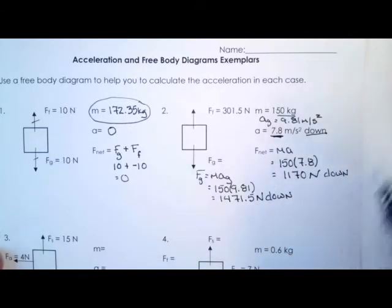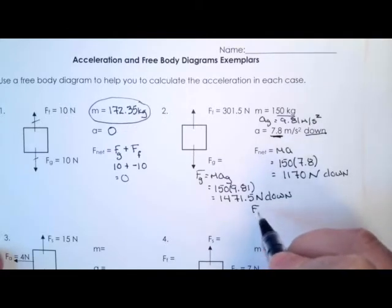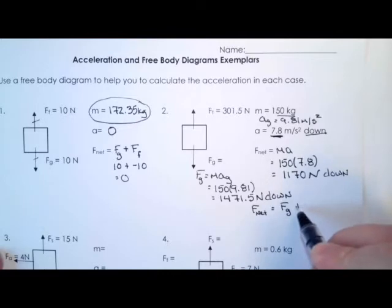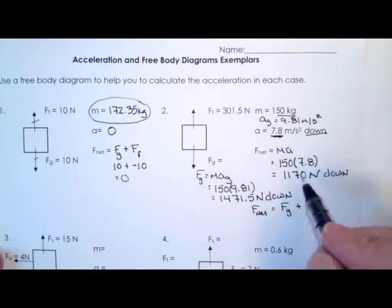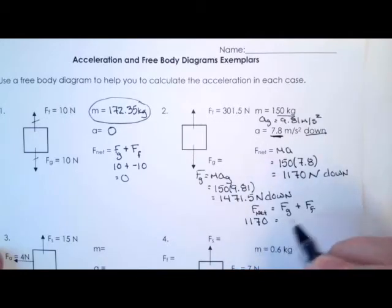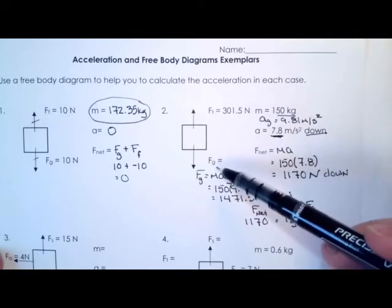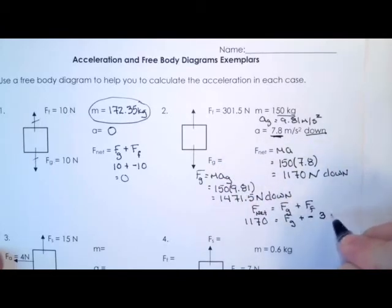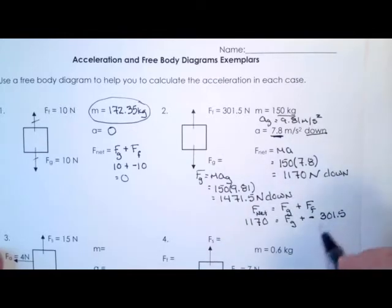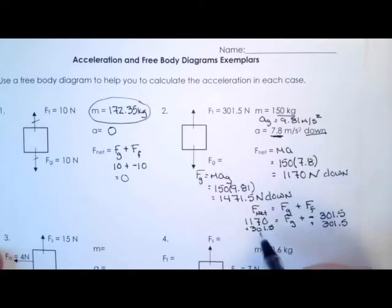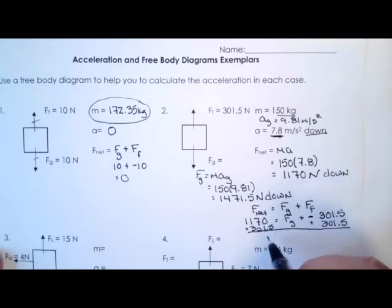Now another way that you could have figured out what the force of gravity is, is you could have used F_net equals the force due to gravity plus the force of friction. So you knew that F_net is 1170 equals F_g, which is what we're looking for, plus negative 301.5. And when you calculate that out, you're going to add 301.5 to both sides, and guess what you get? You get 1471.5 newtons. So you get the same thing, it's just two different ways of getting it. My personal favorite, if you're given the mass and you know the acceleration due to gravity, calculate that thing using that. This seems a little bit more complex.